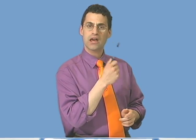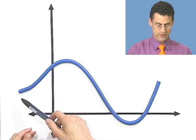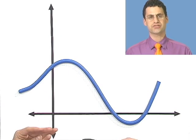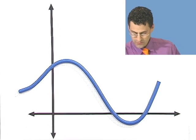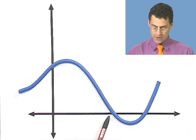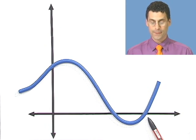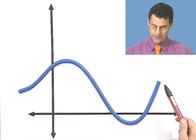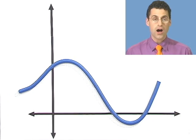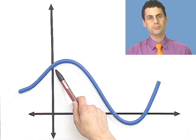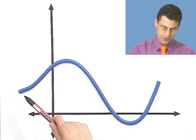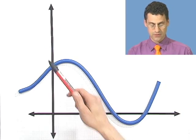These are called x-intercepts and y-intercepts. An x-intercept is where the curve crosses the x-axis. For example, here's a curve in the plane with two x-intercepts — one right here and one right here. A y-intercept is where the curve crosses the y-axis — for example, right here. Note that there could be many intercepts, not just two x-intercepts and one y-intercept, so you have to be careful.